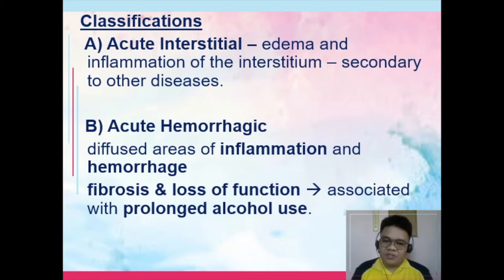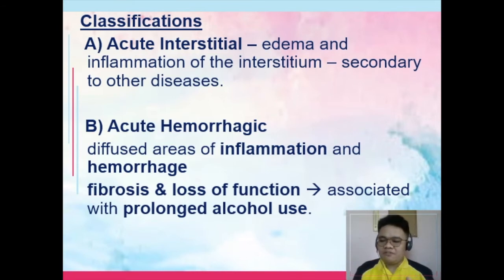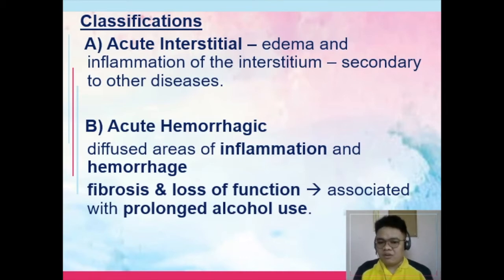The first type is acute interstitial pancreatitis, where there is edema and inflammation of the interstitium of the pancreas, and it is secondary to other diseases. The second type is acute hemorrhagic pancreatitis, characterized by diffuse areas of inflammation and hemorrhage, associated with fibrosis and loss of function. Acute hemorrhagic pancreatitis is commonly associated with prolonged alcohol use.